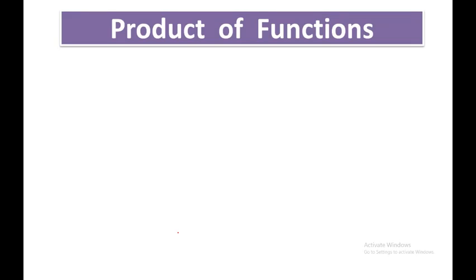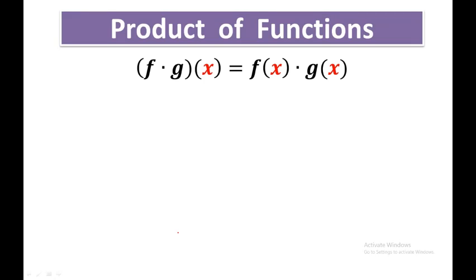For the product of functions, let f and g be functions. Their product, denoted by f times g, is the function (f · g)(x) = f(x) · g(x).